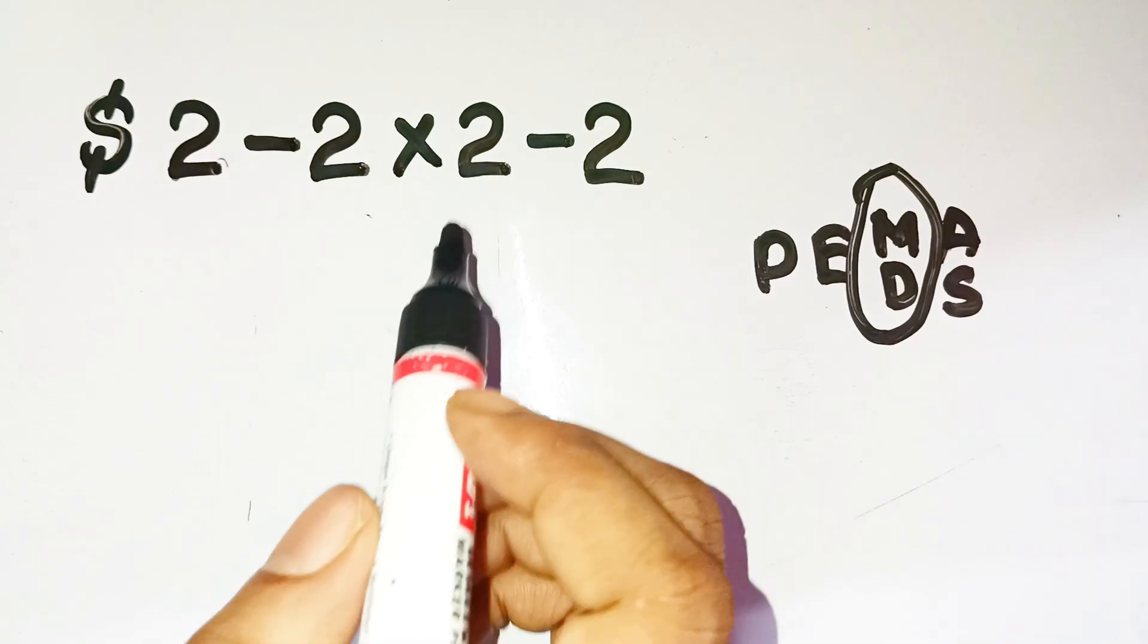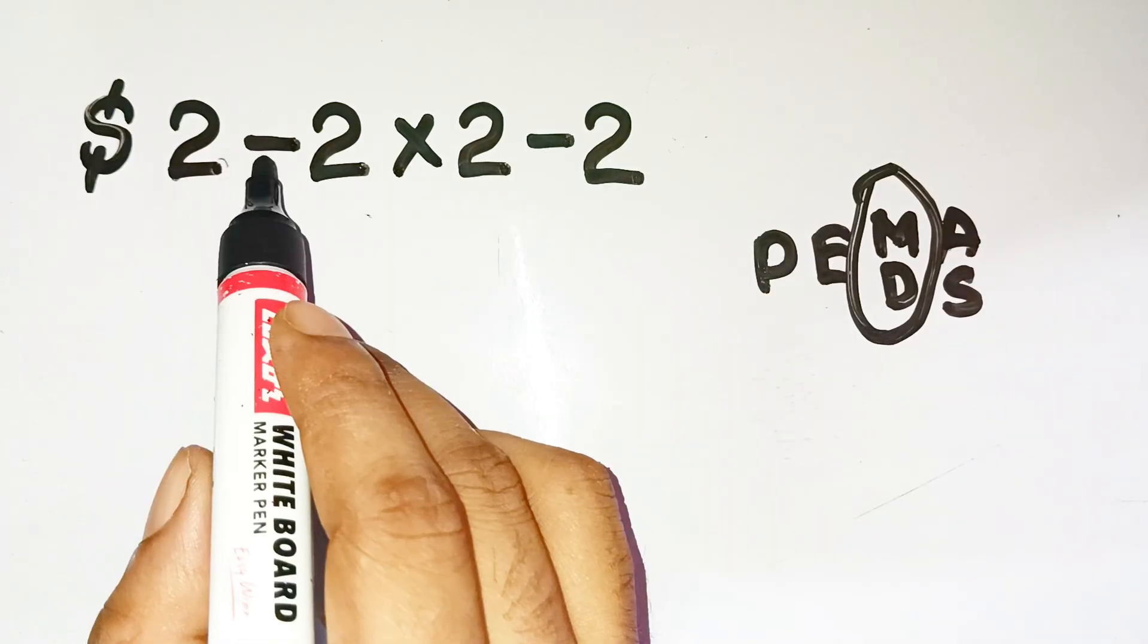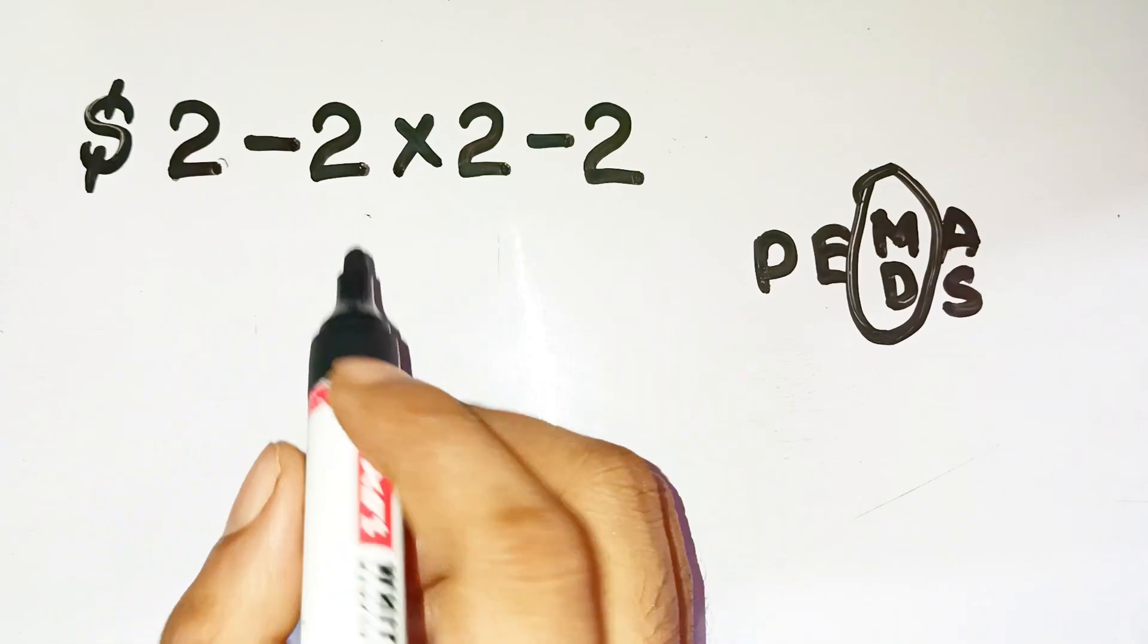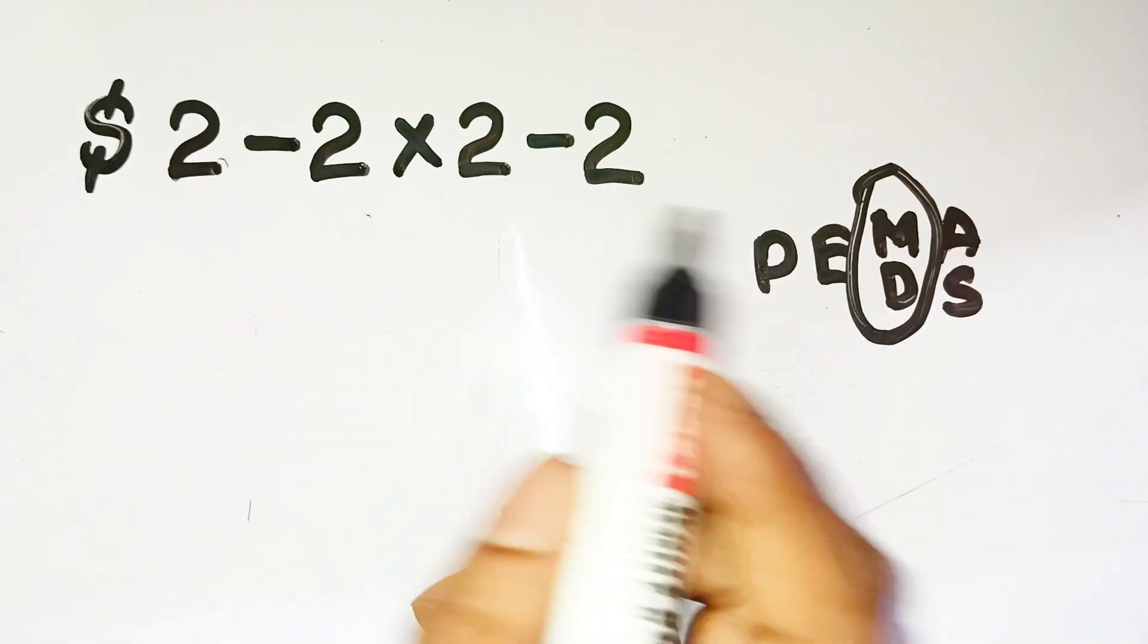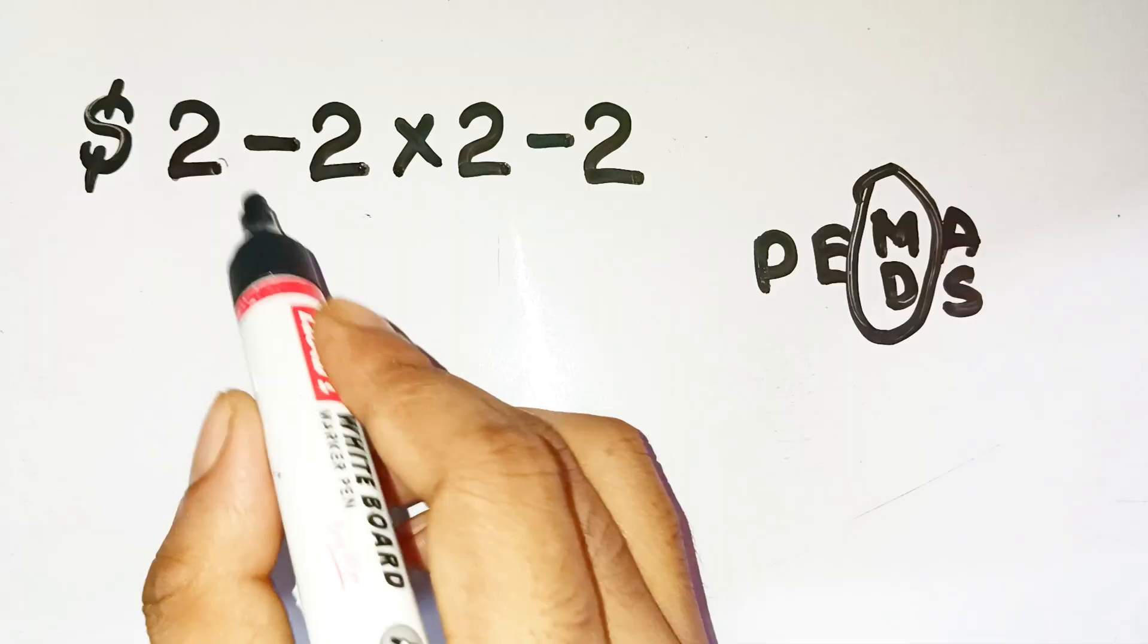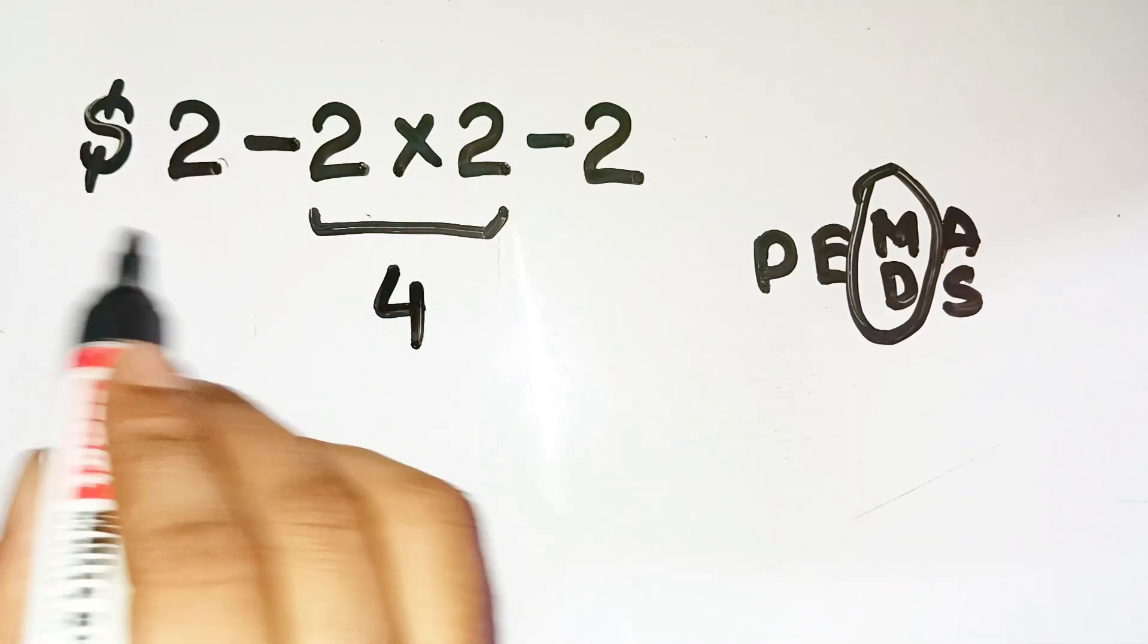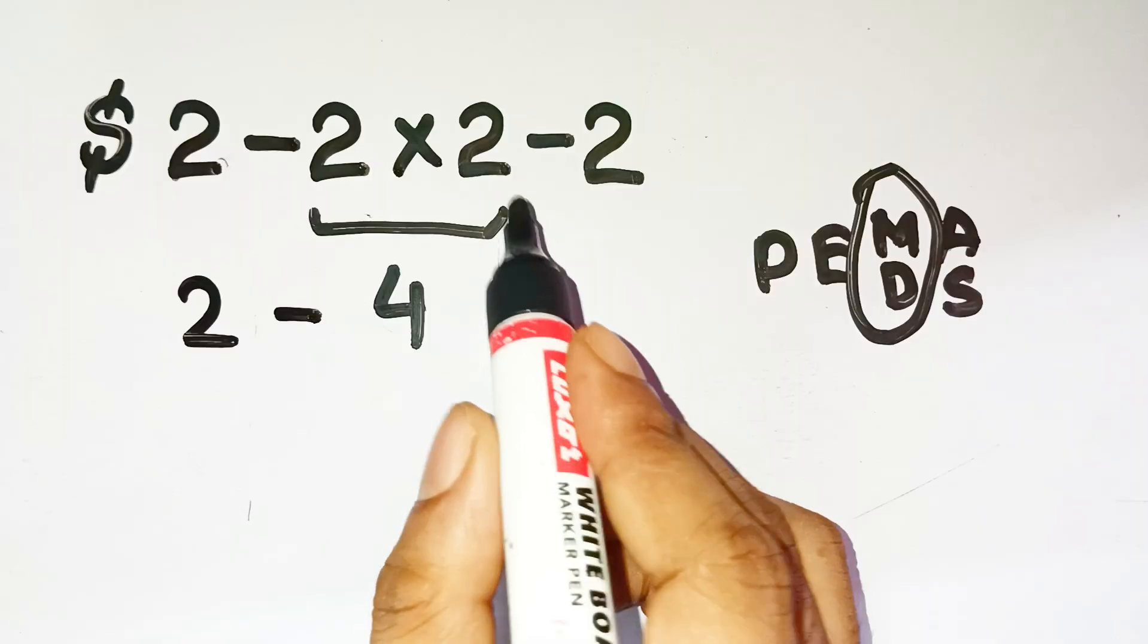So let's apply that properly. The original expression is two minus two times two minus two. There are no parentheses or exponents, so we start with the multiplication. That's two times two, which equals four. Now rewrite the expression. It becomes two minus four minus two.